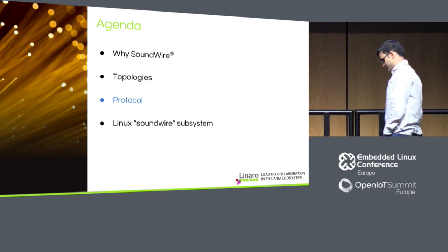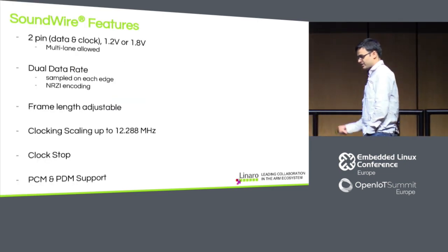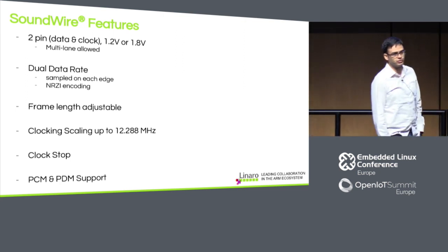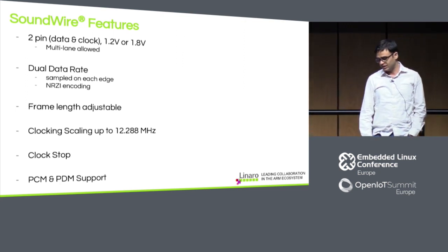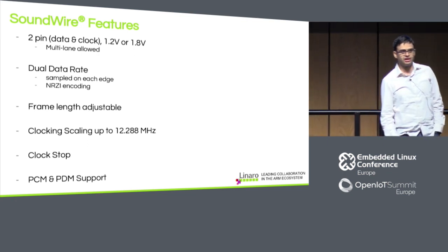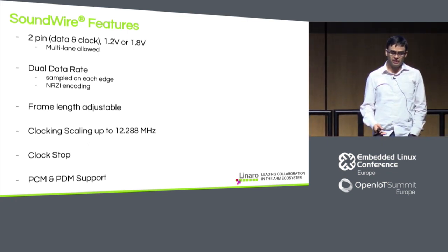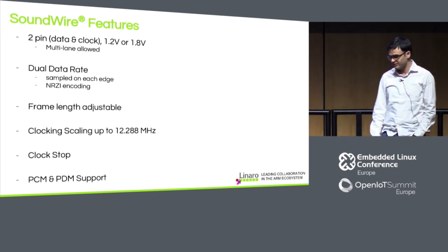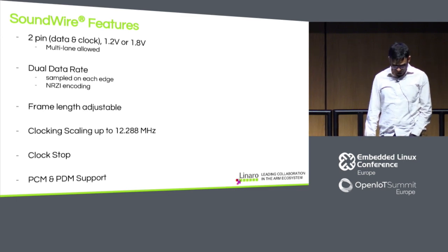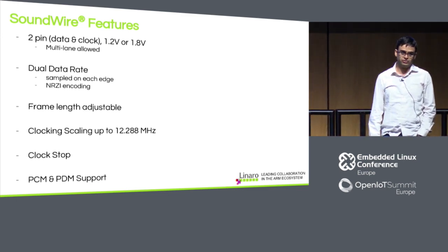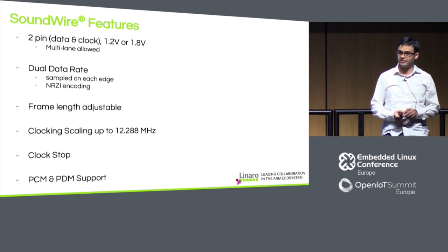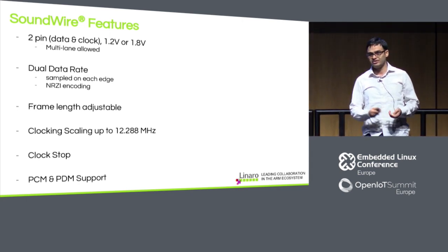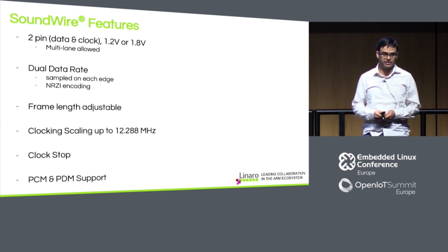Now let's go into the protocol. As seen in the previous diagrams, it's a two-pin bus with data and clock, supporting both 1.2 and 1.8 volts. As shown in the multi-lane diagram, you can have multiple data lanes if bandwidth is insufficient or you want complex audio topologies. It's a serial bus but a dual data rate bus — data is sampled on both the rising and falling edges of the clock, which essentially doubles your bandwidth relative to your clock rate.